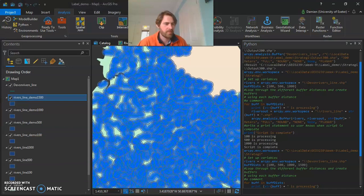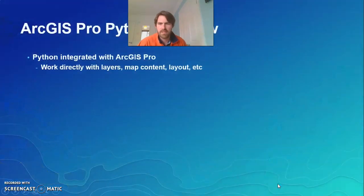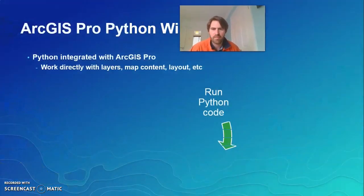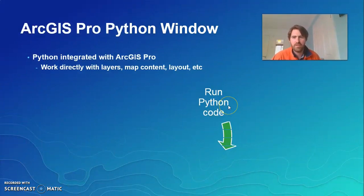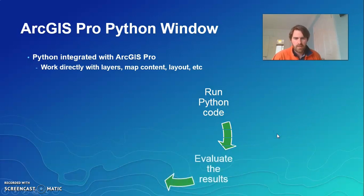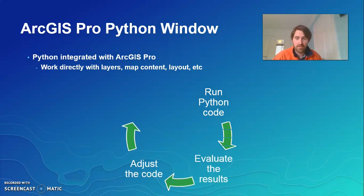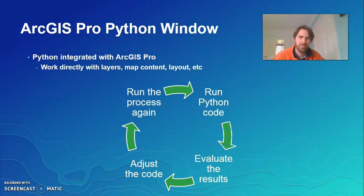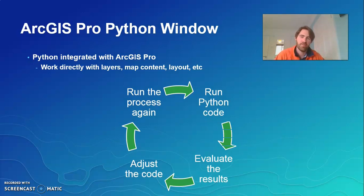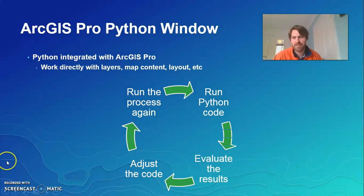So some really powerful tools — we've used the Python window, run Python code, evaluated the results, looked at buffer analysis, adjusted the code, and run it again. That's the beauty of the Python window in ArcGIS Pro. In the practical we'll be doing a much bigger workflow in a Jupyter Notebook, so join me there. Thanks very much.